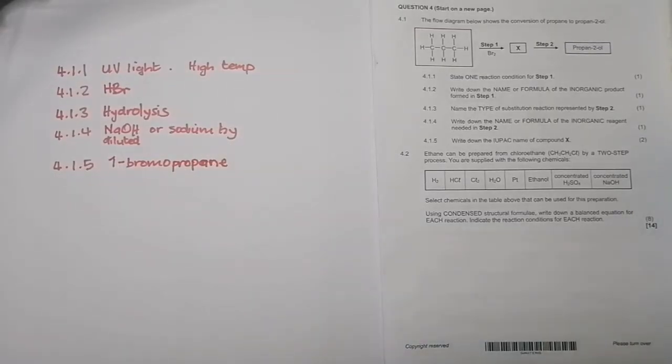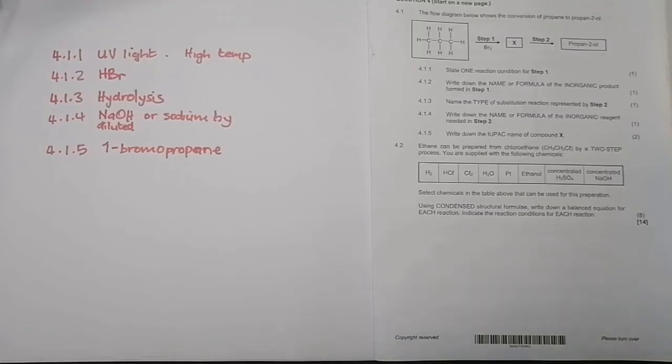There we go, and we go to the very next section. This would be an easy 14 marks for us. They say ethane can be prepared from chloroethane by a two-step process. You are supplied with the following chemicals. They say select the chemicals in the table above that can be used in the preparation. Using condensed structural formulas, write down a balanced equation for each reaction. Indicate the reaction conditions for each reaction.